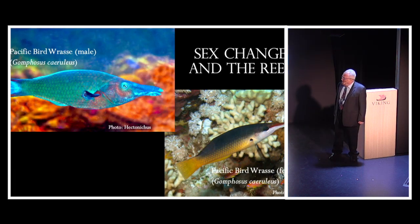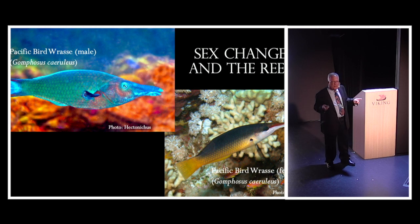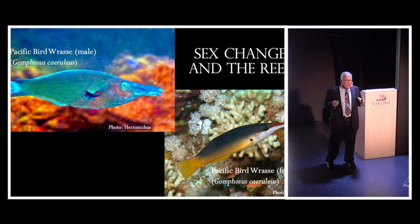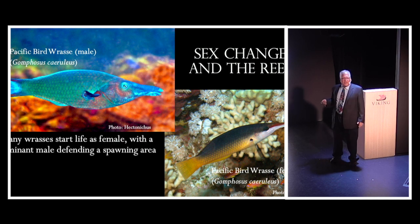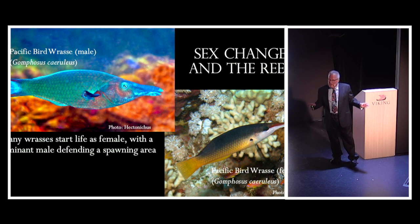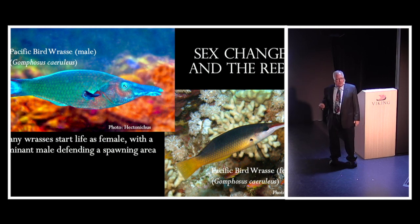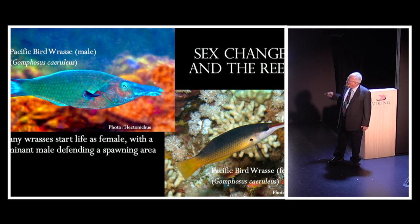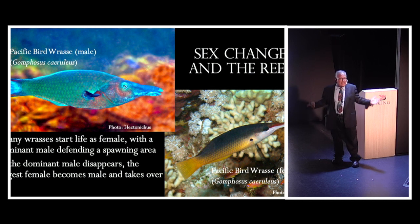So we go from sex to sex change. Fishes aren't like us — we are male or female by virtue of X or Y chromosomes, but in fishes it depends on the genes and is a much more fluid situation. A lot of wrasses, like this bird wrasse, start out as females — all of them hatch as females — and they form a dominance hierarchy. The top one turns into a male and takes the other females as his harem, defending a spawning area. If anything happens to him, the next female in the pecking order turns into a male and takes over, keeping the system going.